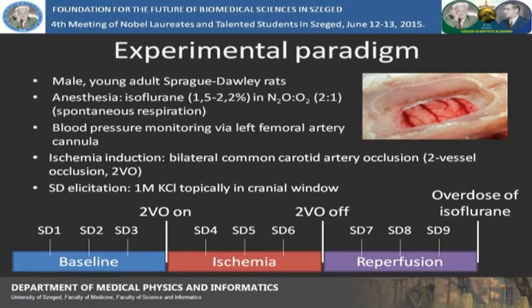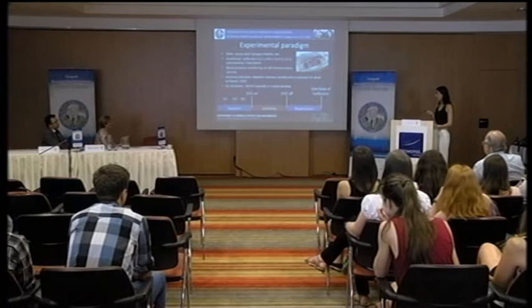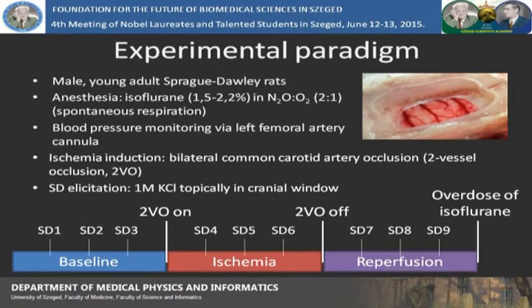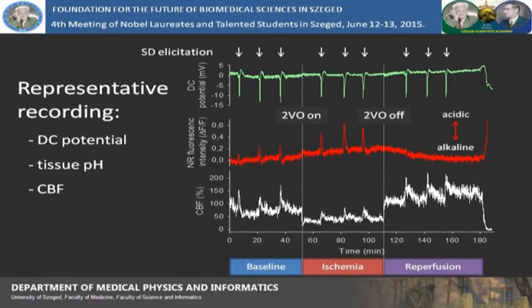After preparation of a closed cranial window, we elicited spreading depolarizations with potassium chloride. After 10 minutes of baseline recording, we elicited three spreading depolarizations. Then we created a transient ischemia with occlusion of the common carotid arteries on both sides. During ischemia, we elicited three more spreading depolarizations. Then we cancelled the occlusion and started reperfusion of the brain. During reperfusion, we elicited three more spreading depolarizations. This representative recording shows full registration of direct current potential, changes in intracellular pH, and changes in cerebral blood flow.